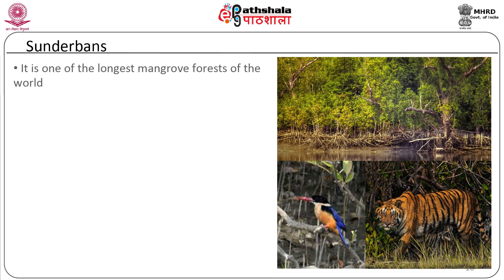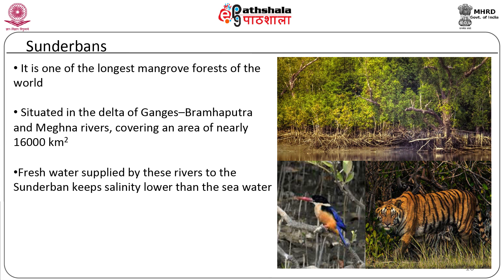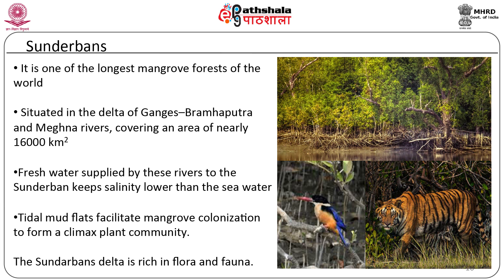The Sundarbans is one of the longest mangrove forests of the world. It is situated in the delta of the Ganges, Brahmaputra and Meghna rivers, covering an area of nearly 16,000 km square. 60% of this is in Bangladesh and only 40% is in India. It experiences a warm humid climate and annual rainfall between 1600 to 1800 mm, received from June to October during the southwest monsoon. The fresh water of the Sundarbans is supplied by the Ganges and Brahmaputra throughout the year, which is why the salinity of the Sundarbans is lower than sea water. The Sundarbans delta is rich in flora and fauna — home of large numbers of invertebrates, insects, fishes, mollusks, crustaceans, monkeys and reptiles — and is the only habitat for the endangered Royal Bengal tiger.